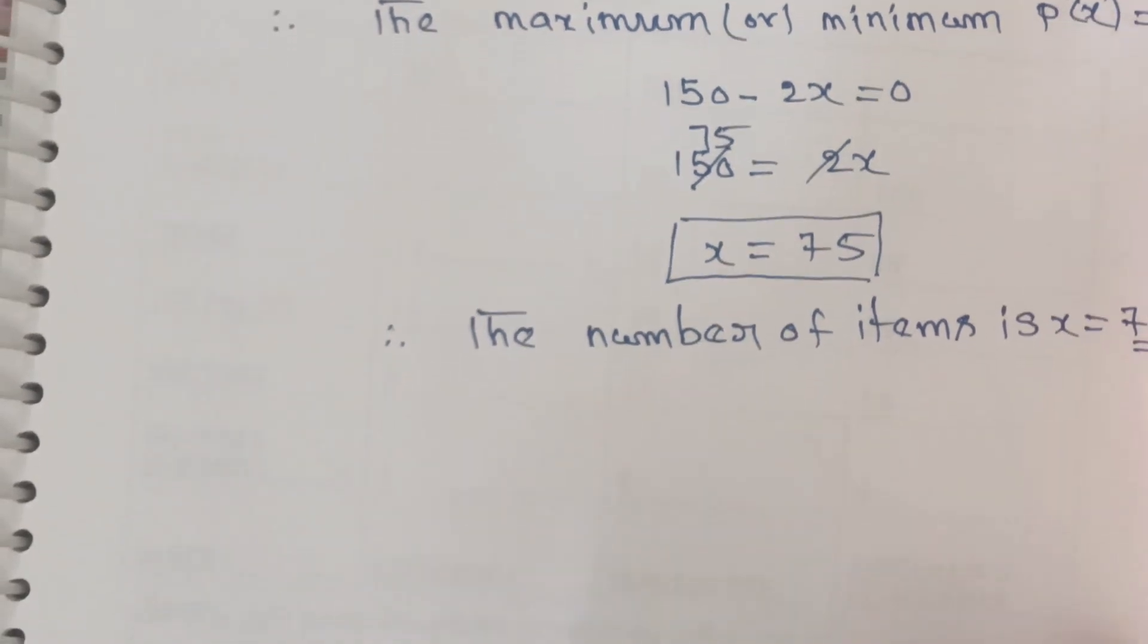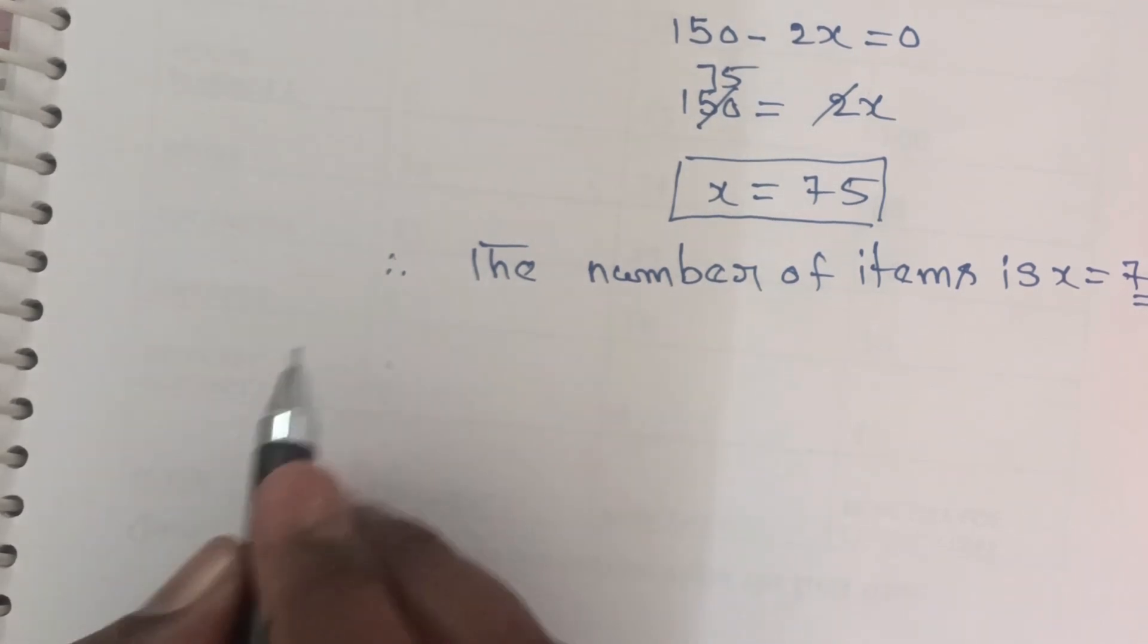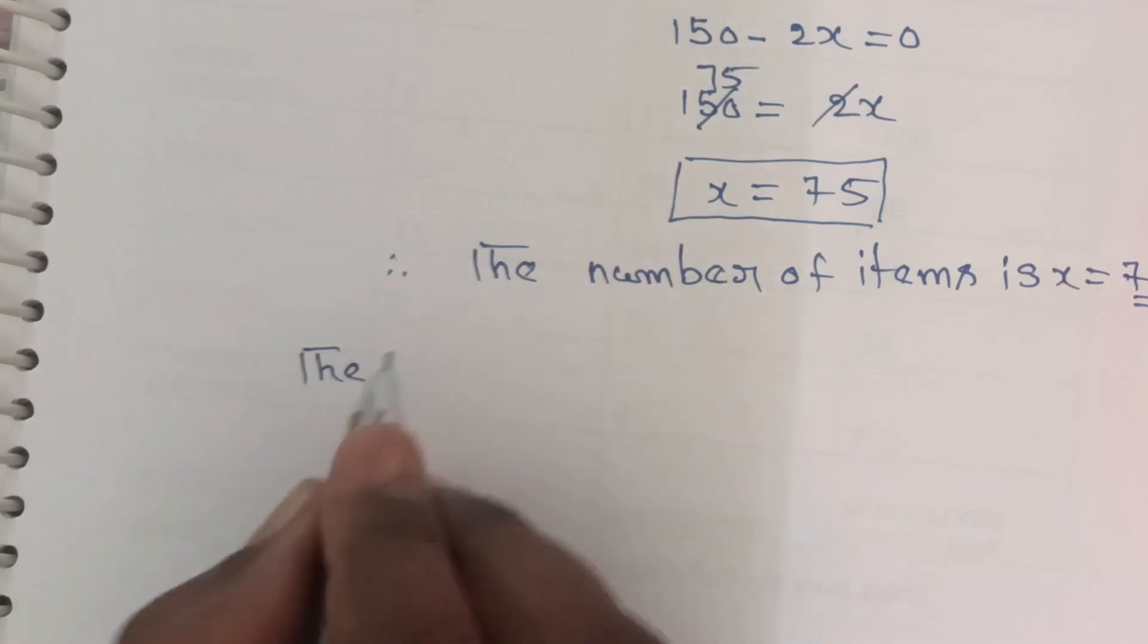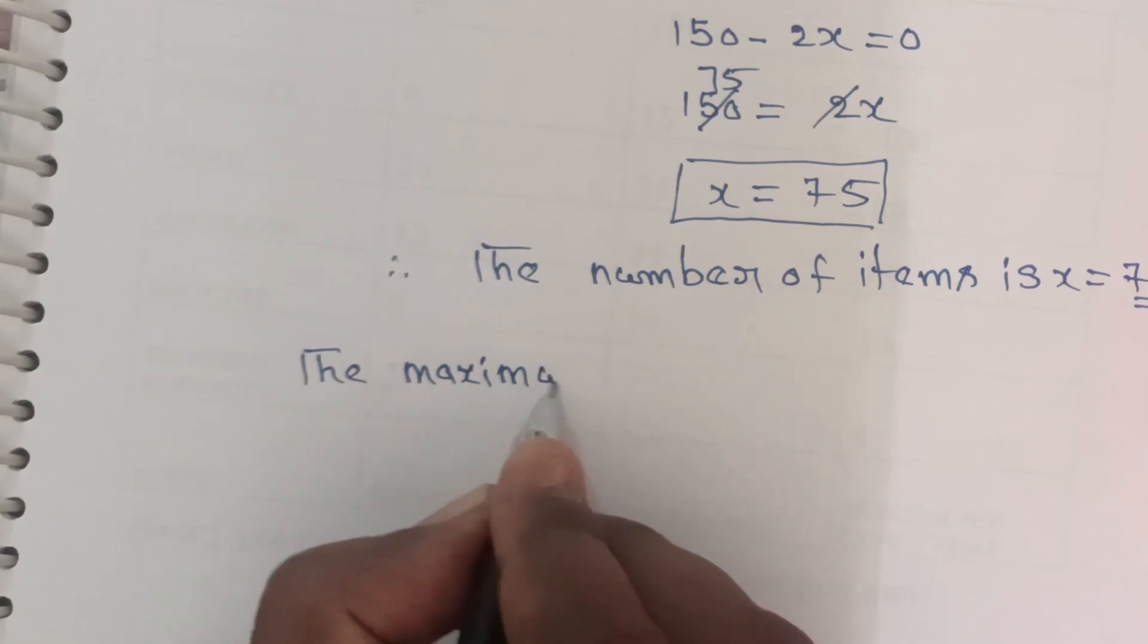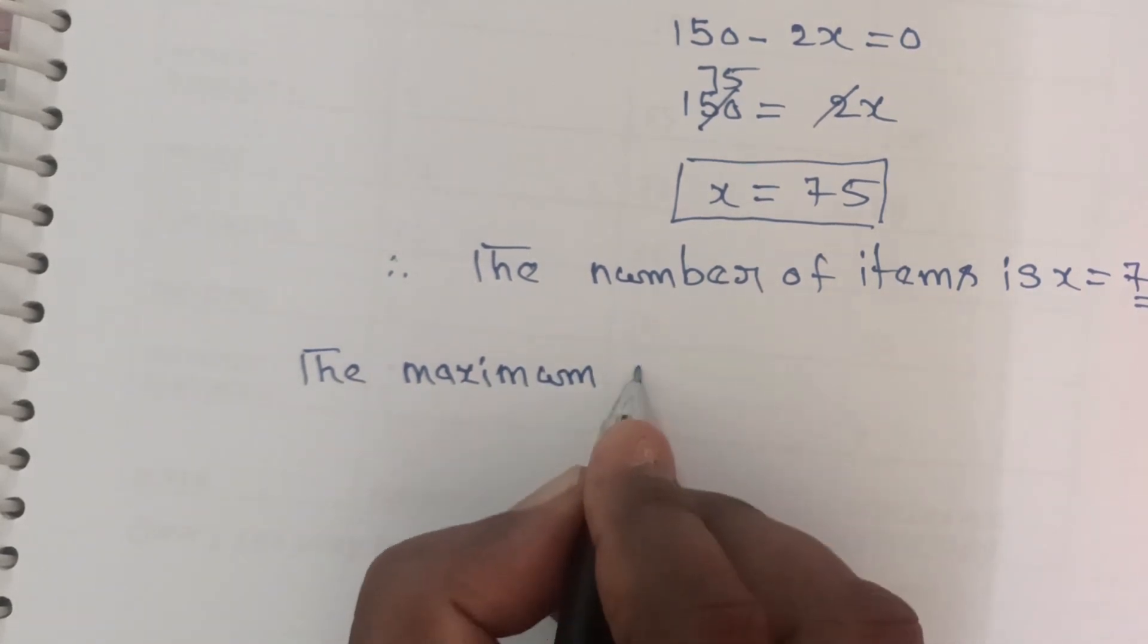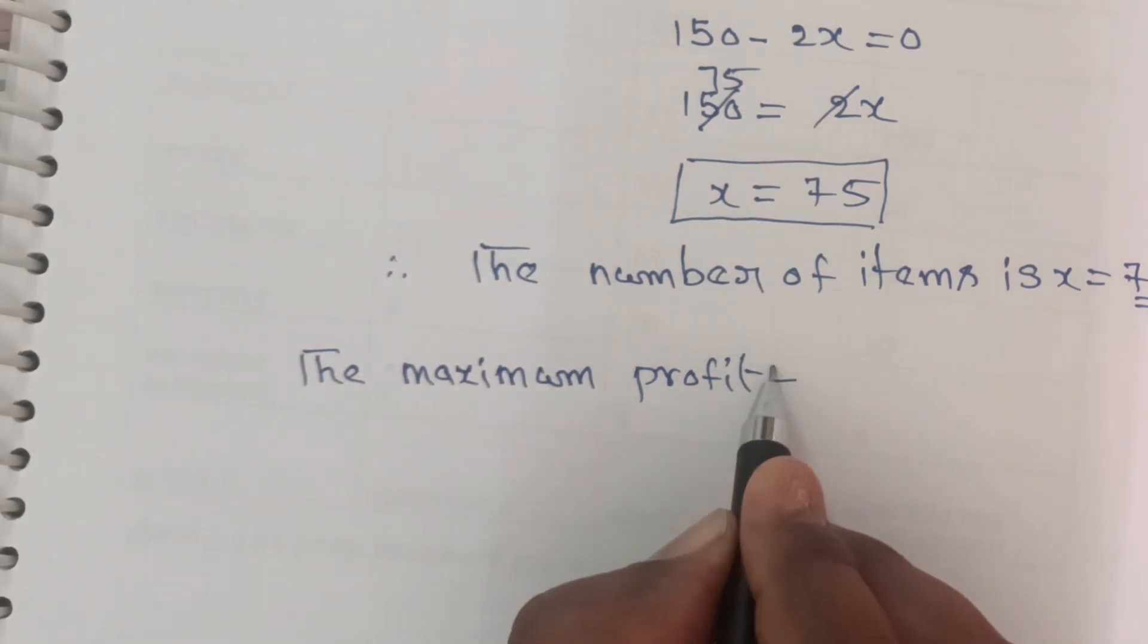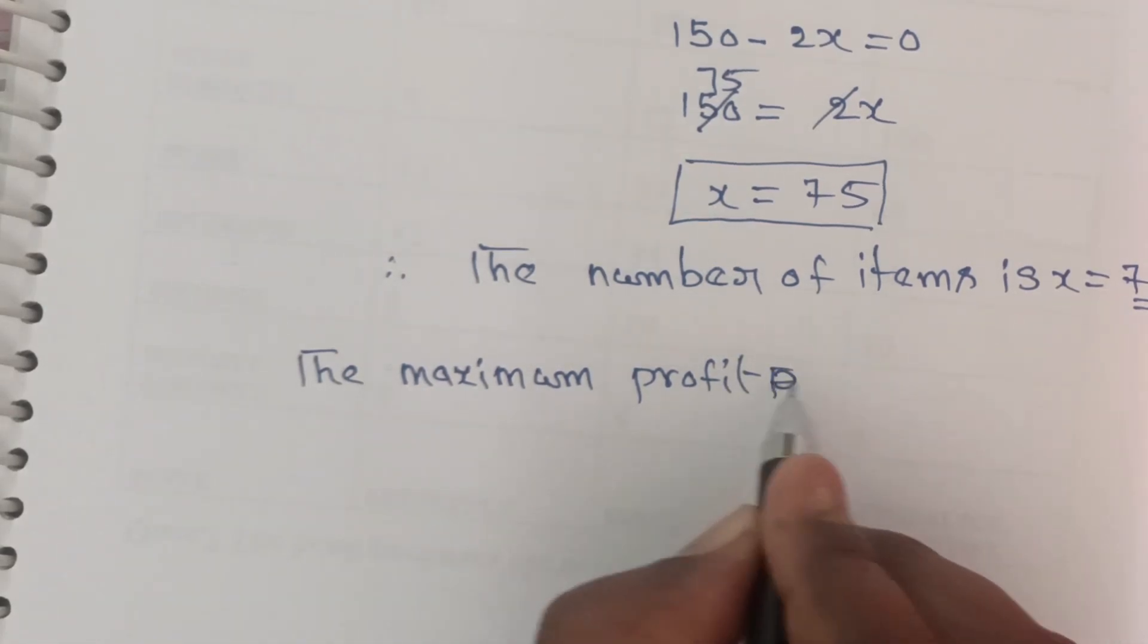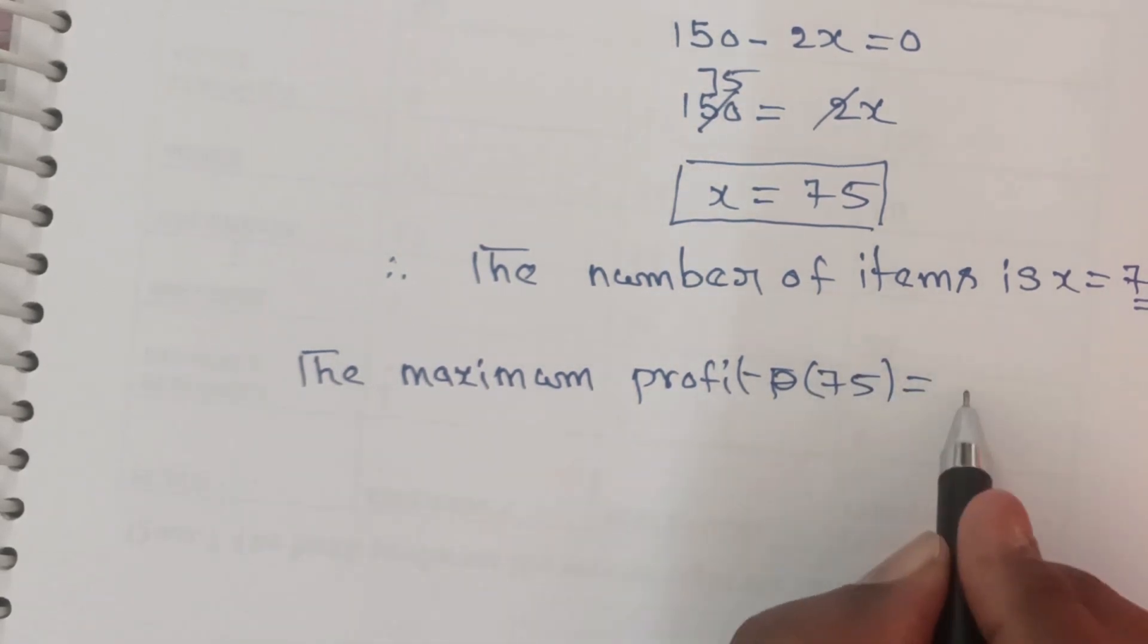Now we need to find out the maximum profit. The maximum profit equals p(75). Substituting x = 75 into the function: p(75) = 150 × 75 - 75² - 1600.